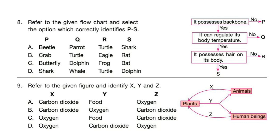Question 8: Refer to the given flow chart and select the option which correctly identifies P to S. Look at the flow chart and try to find out your answer. Correct answer is option B. P is crab, Q is turtle, R is eagle, and S is rat.